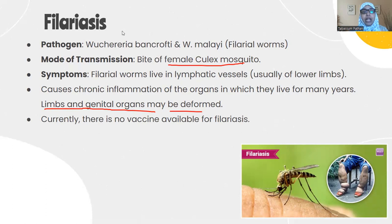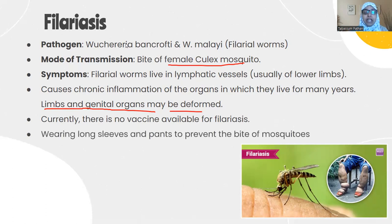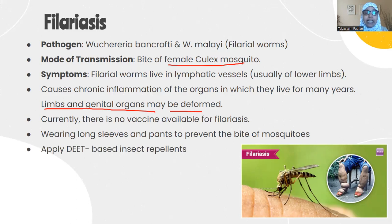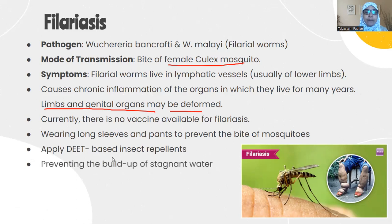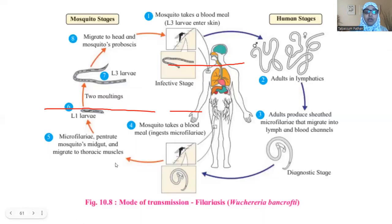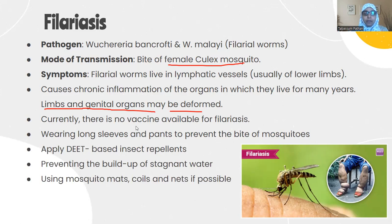Preventive measures include wearing long-sleeved clothing to prevent mosquito bites, using mosquito repellents and mosquito nets. Treatment includes applying DEET-based insect repellents to prevent mosquito bites. Buildup of stagnant water should be prevented, and using mats, foils, and nets is recommended.